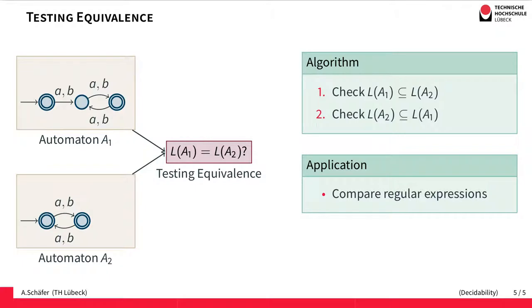And finally we can use the procedure for testing subset to turn it into a decision procedure for testing equivalence of two automata.